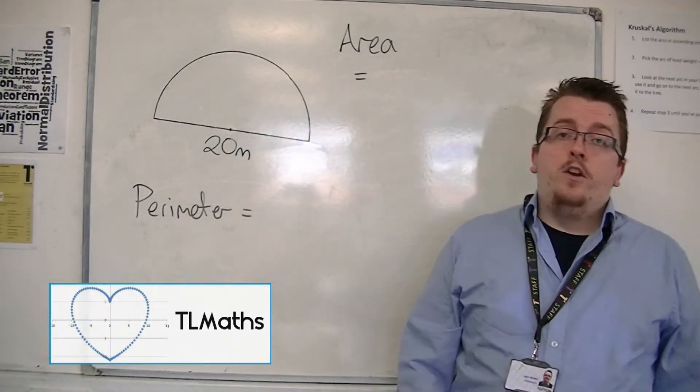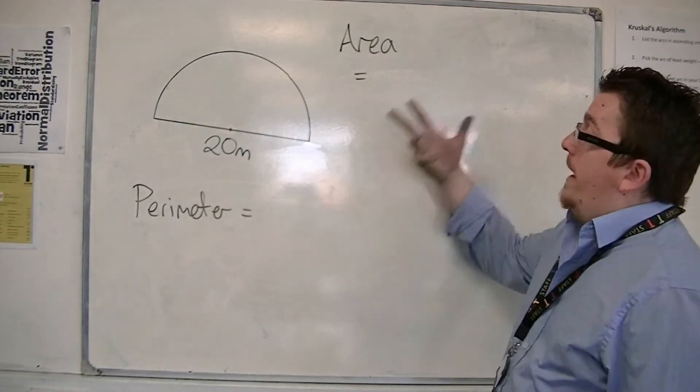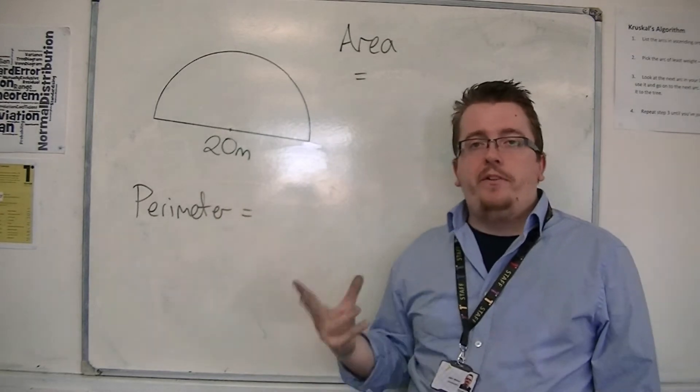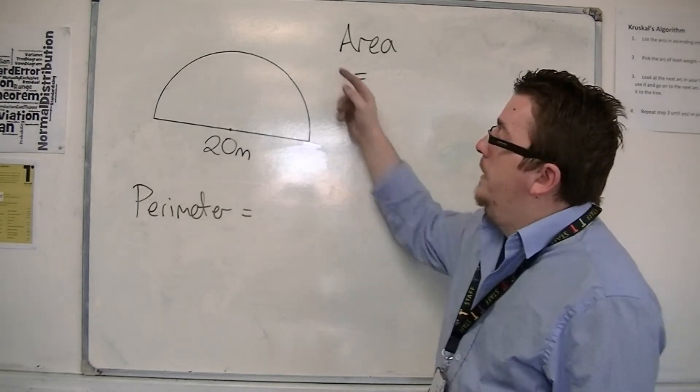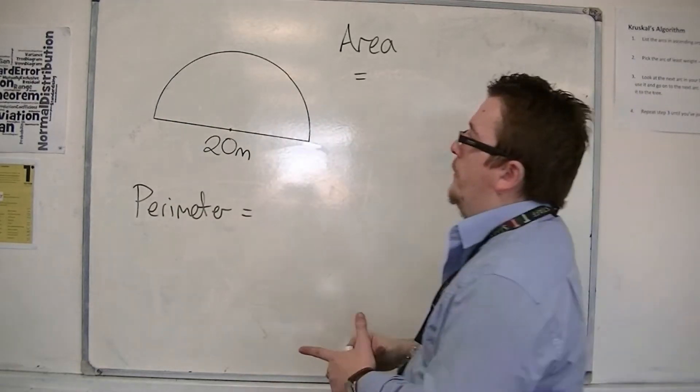OK, so let's say we need to find the area and perimeter of this semicircle. We know the area for the whole circle is given by the formula pi r squared.